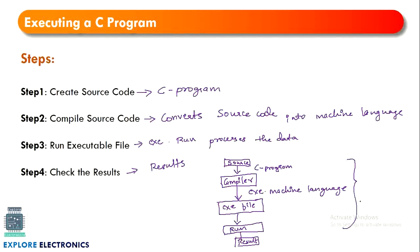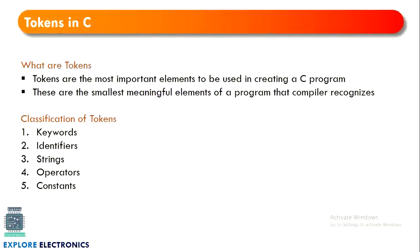Now let's move on to tokens. What are tokens in C language? Tokens are the most important elements used in creating a C program — these are the smallest meaningful elements of a C program, and the compiler understands these elements. There are five types of tokens in C: keywords, identifiers, strings, operators, and constants. We'll look into each of them in detail.